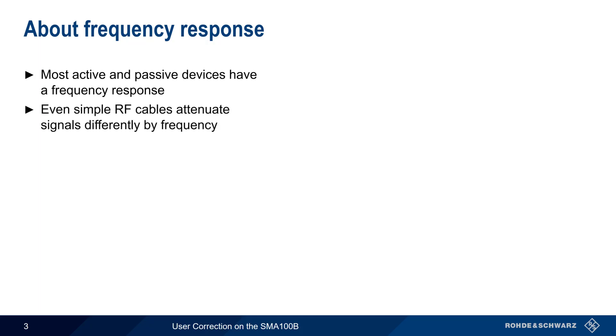To understand user correction, we need to start by explaining something called frequency response. Almost all active and passive devices found in RF have so-called frequency response. That is, they affect signals differently at different frequencies. Even a simple RF cable will attenuate signals by different amounts depending on the frequency of the signal.